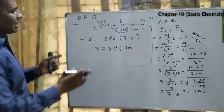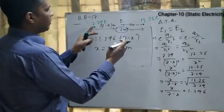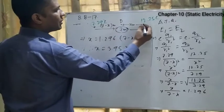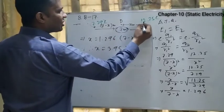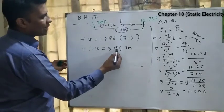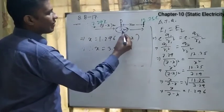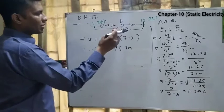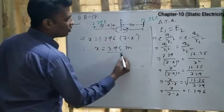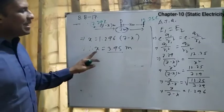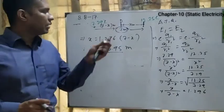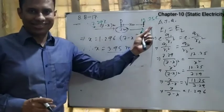The total distance between the two charges is 7 meters, so the midpoint would be at 3.5 meters. But we found X = 3.95 meters, which is not equal to 3.5 meters. Therefore, point D is not at the midpoint of the two charges.